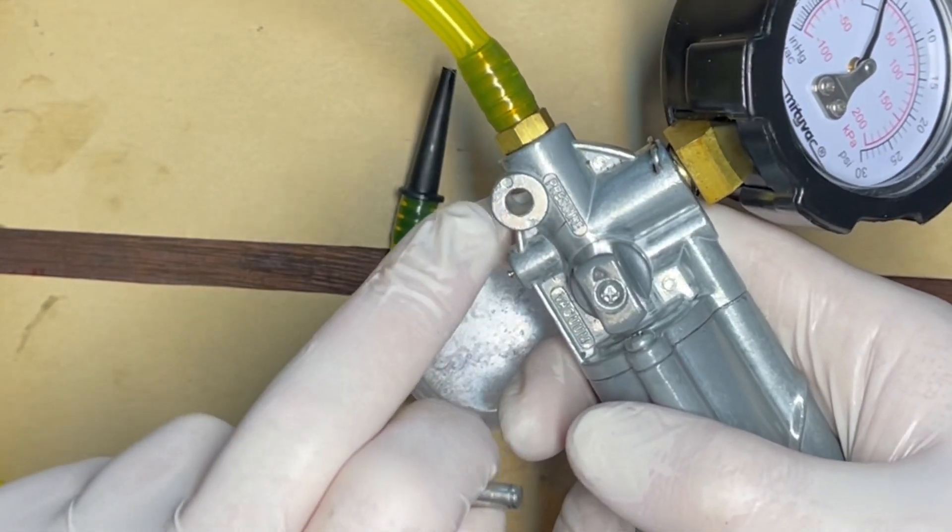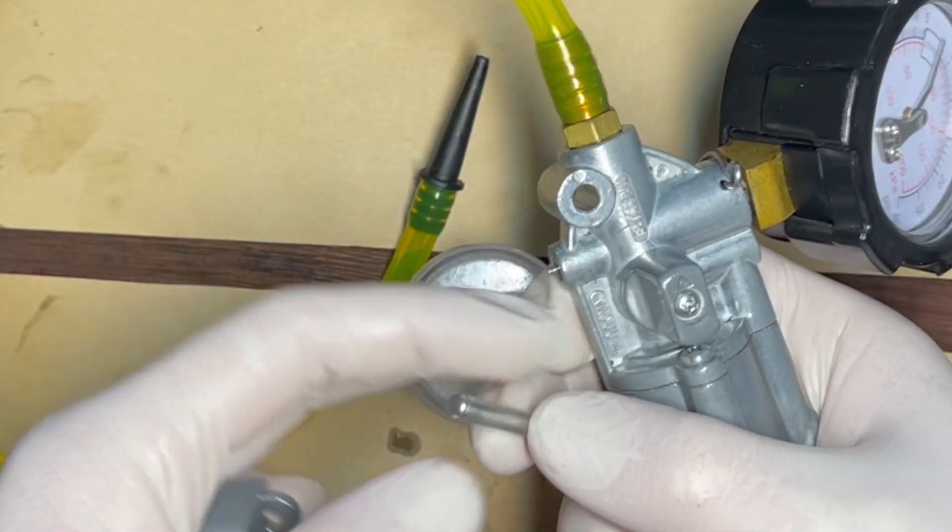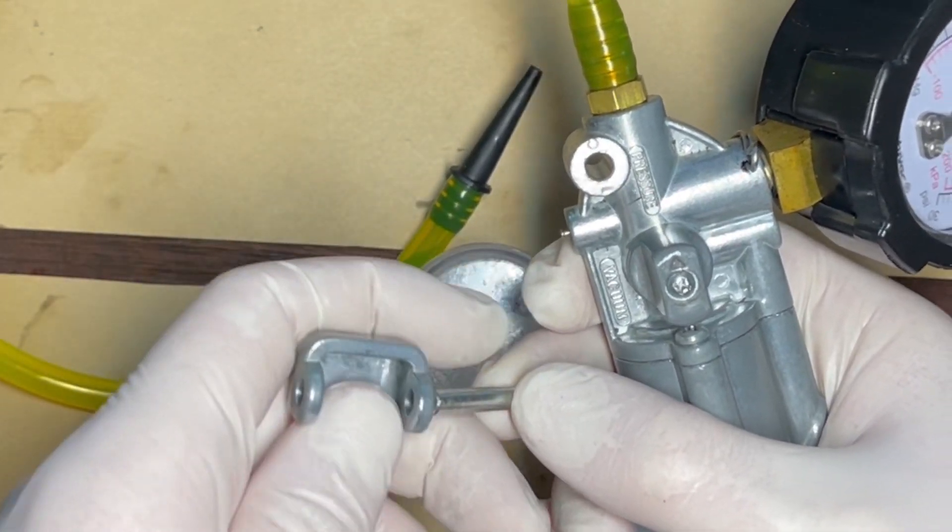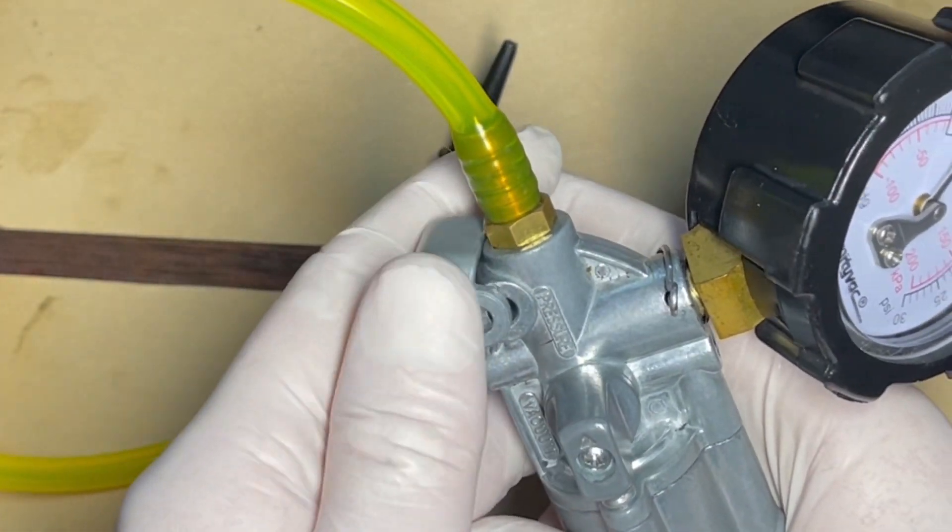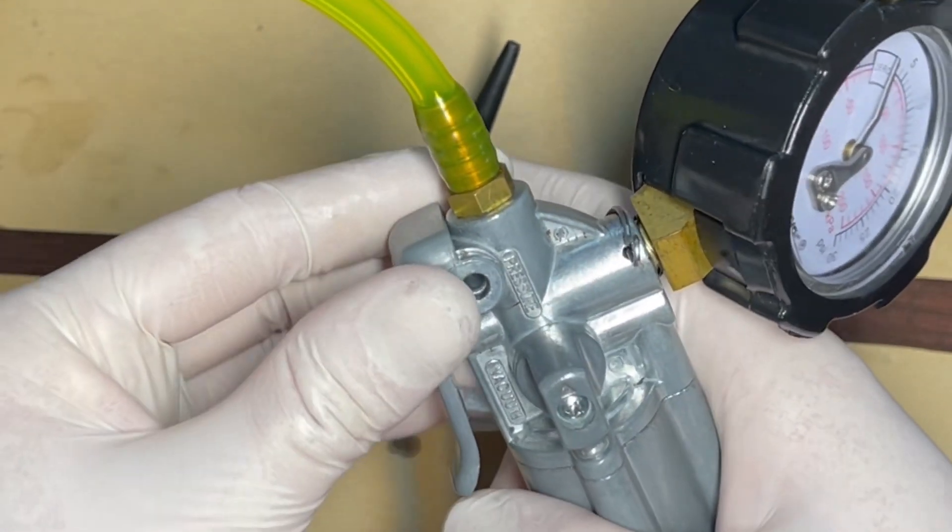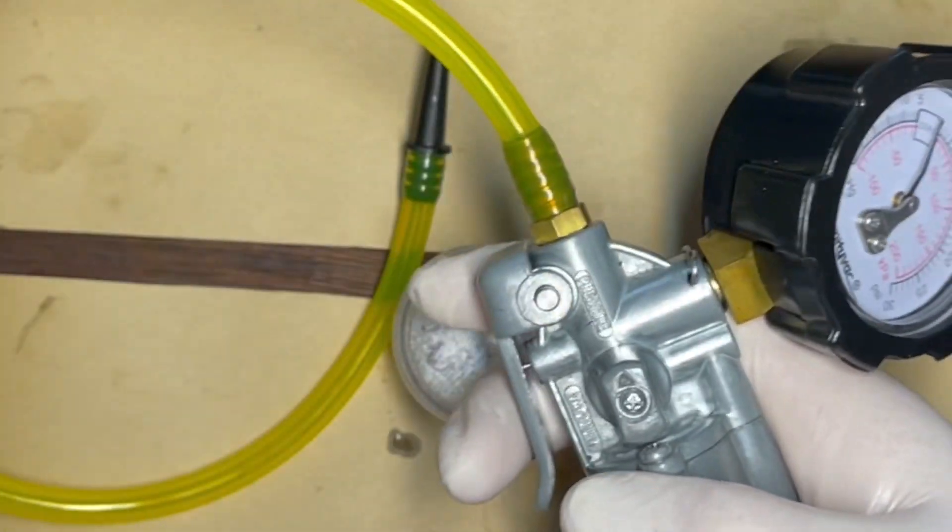So lightly oil the shaft hole. The pin goes onto the trigger. The trigger then goes over the Schrader valve.